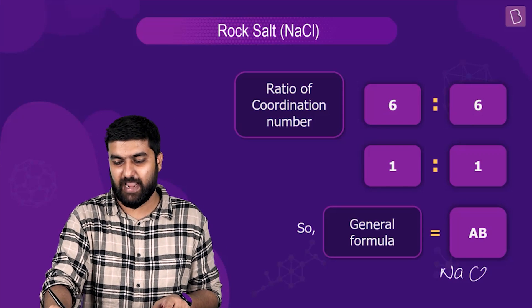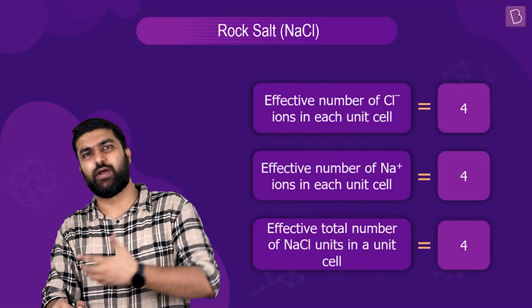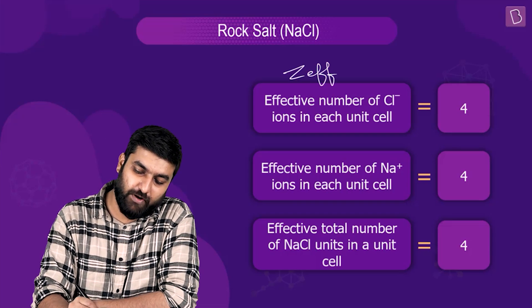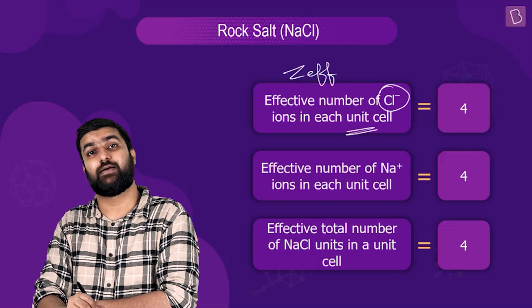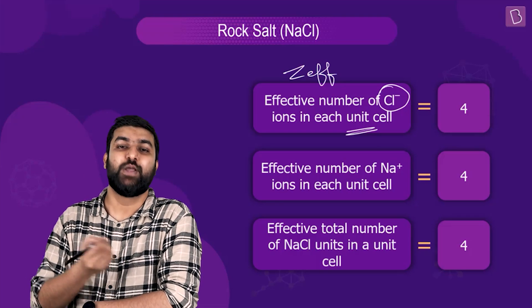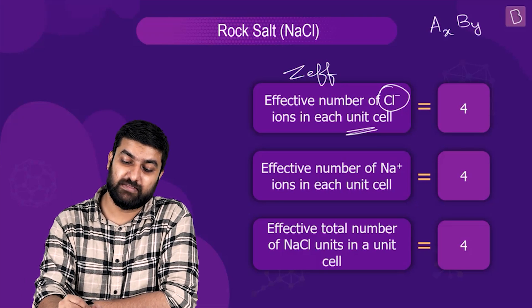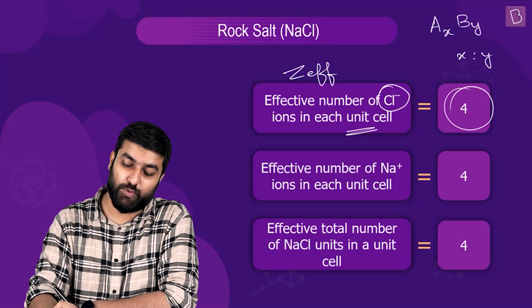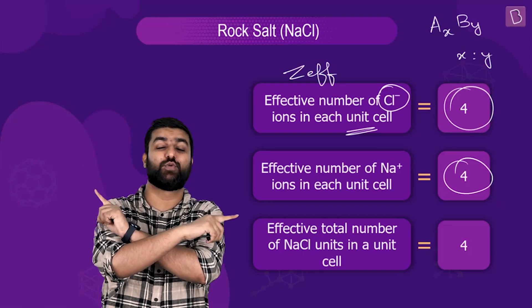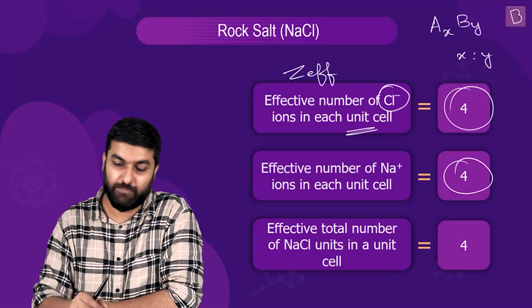Applying the same logic to our coordination numbers — both are six, giving a 1:1 ratio — the general formula turns out to be AB, which is consistent with NaCl where Na⁺ and Cl⁻ are in a 1:1 ratio. Always remember that whatever the molecular formula is, the effective numbers in the unit cell must also reflect that same ratio.